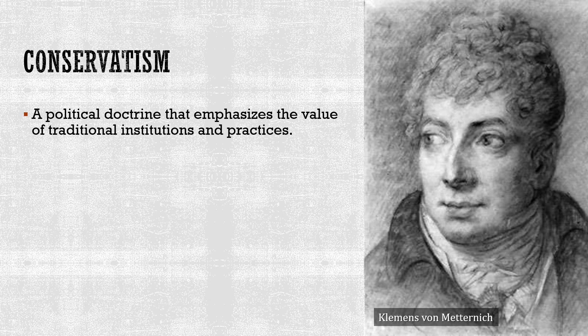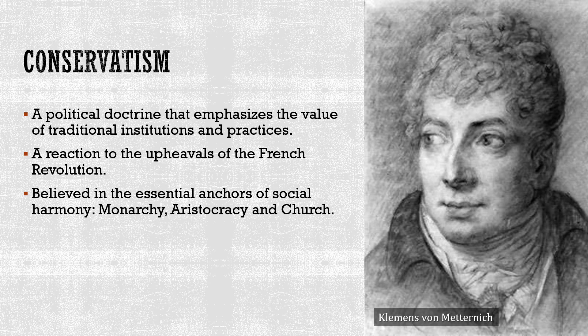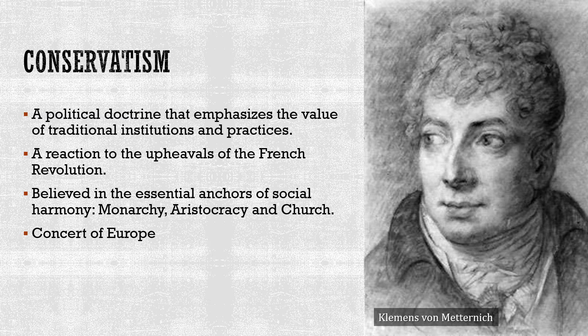So what was conservatism in the 19th century? It was a political doctrine that emphasized the value of traditional institutions and practices, and it was a reaction to the upheavals of the French Revolution — a movement that hearkened back to the way power was distributed prior to the French Revolution. Conservatism in the 19th century believed that the essential anchors of social harmony were: monarchy, aristocracy, and the church. These three elements are the pillars of having a good society. It is often associated with Clemens von Metternich, an Austrian diplomat involved in massive amounts of politics during the first half of the 19th century, and in particular the concept of the Concert of Europe.